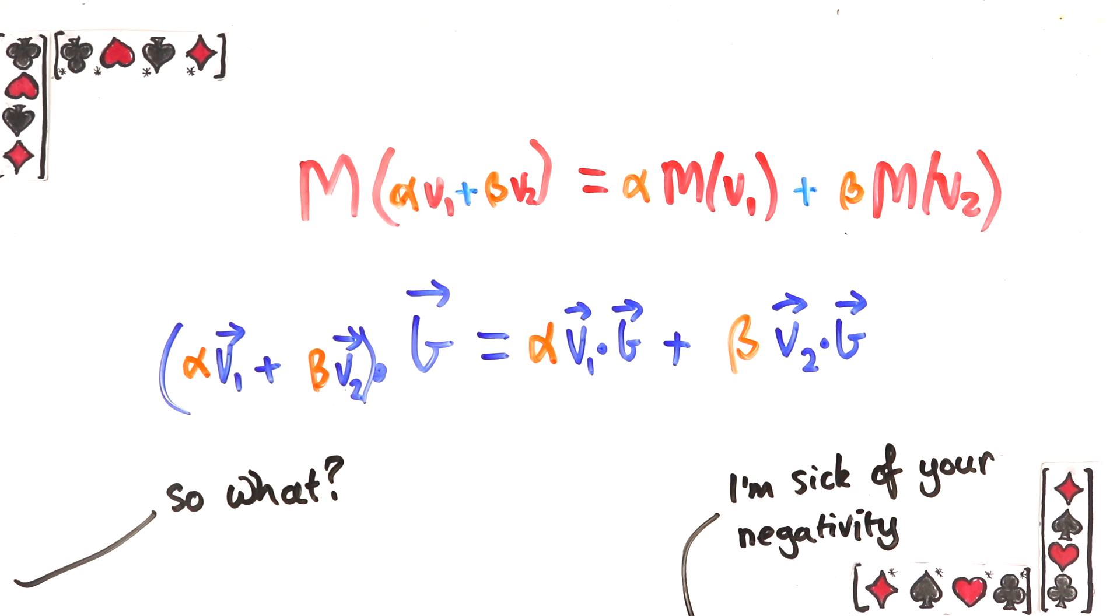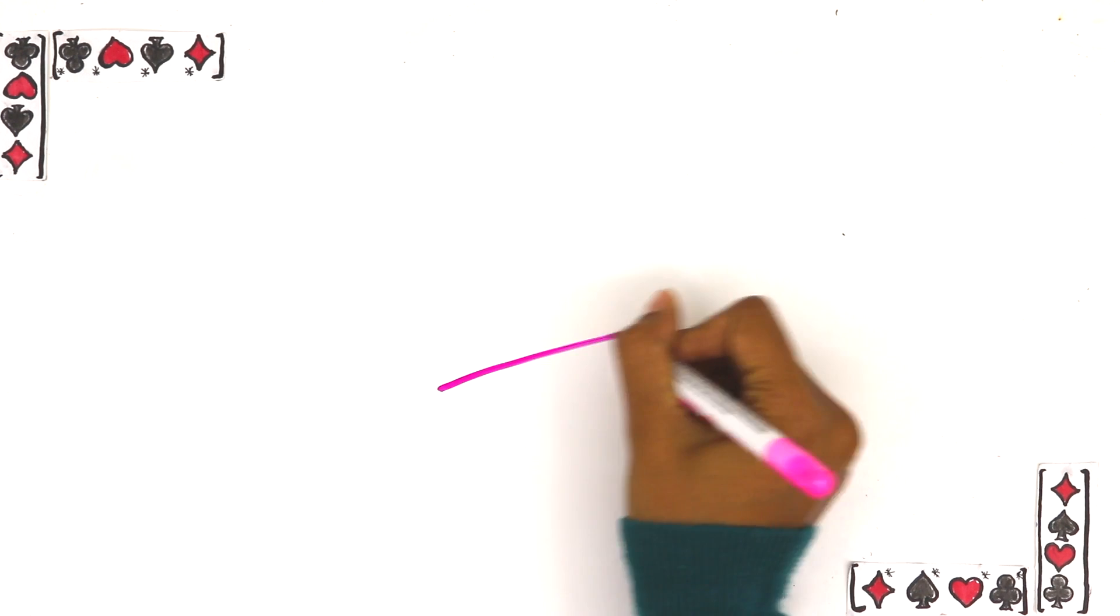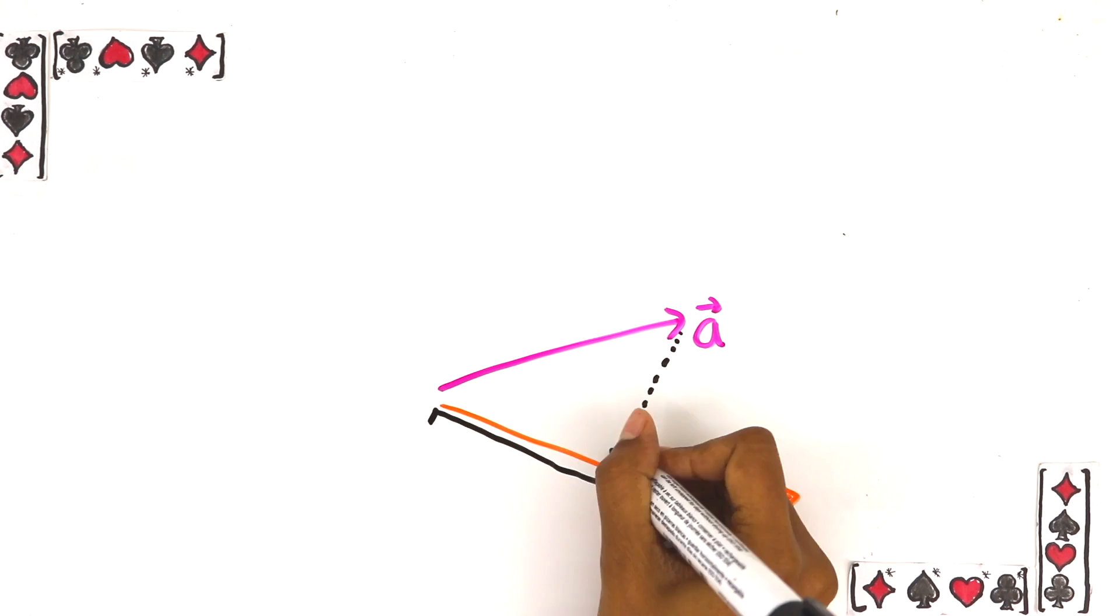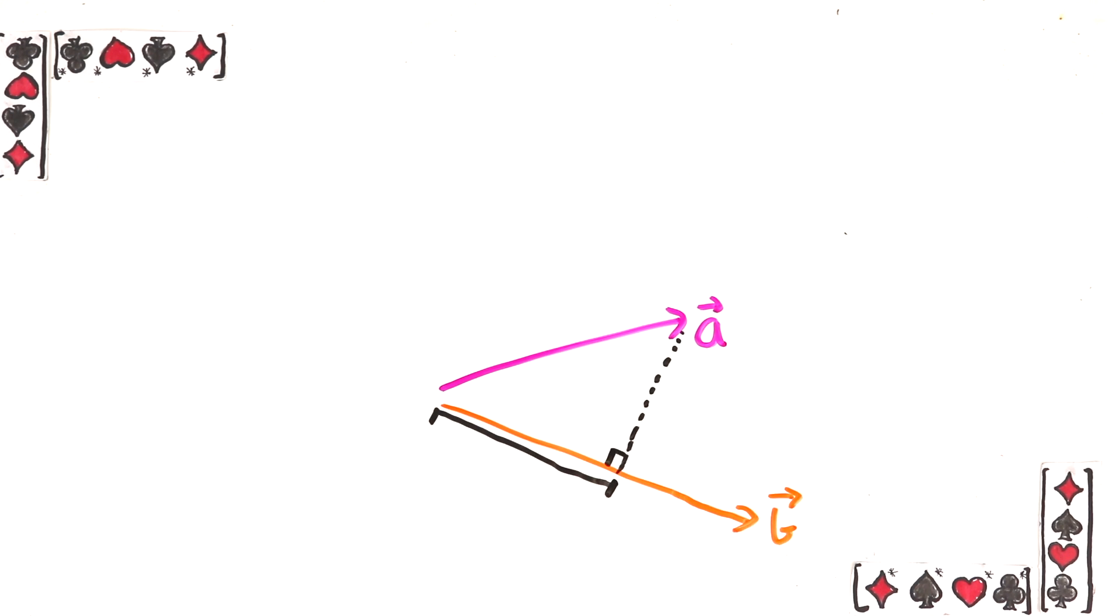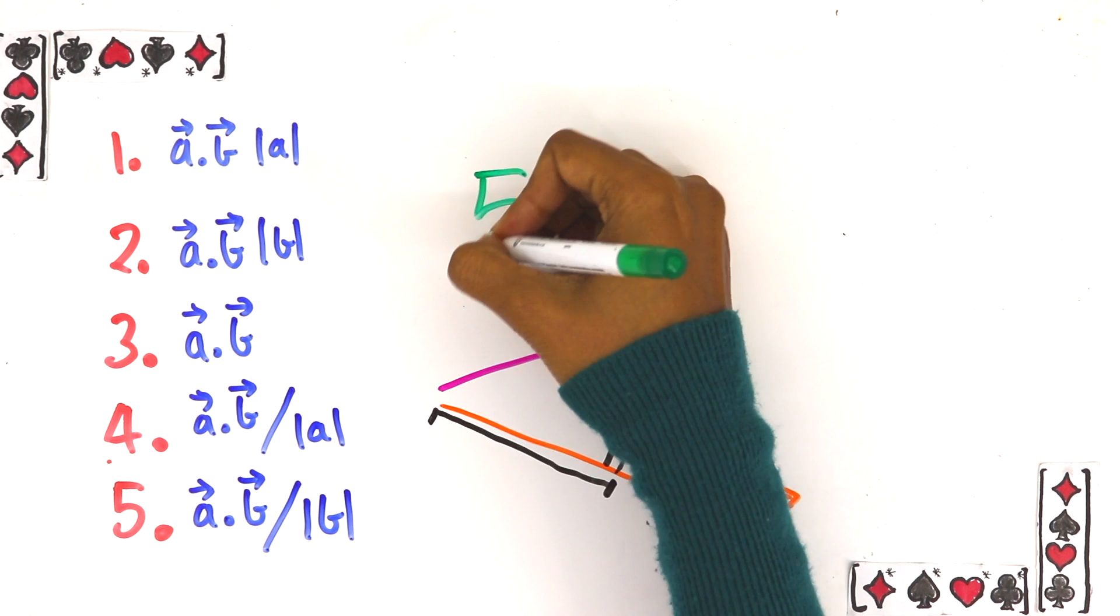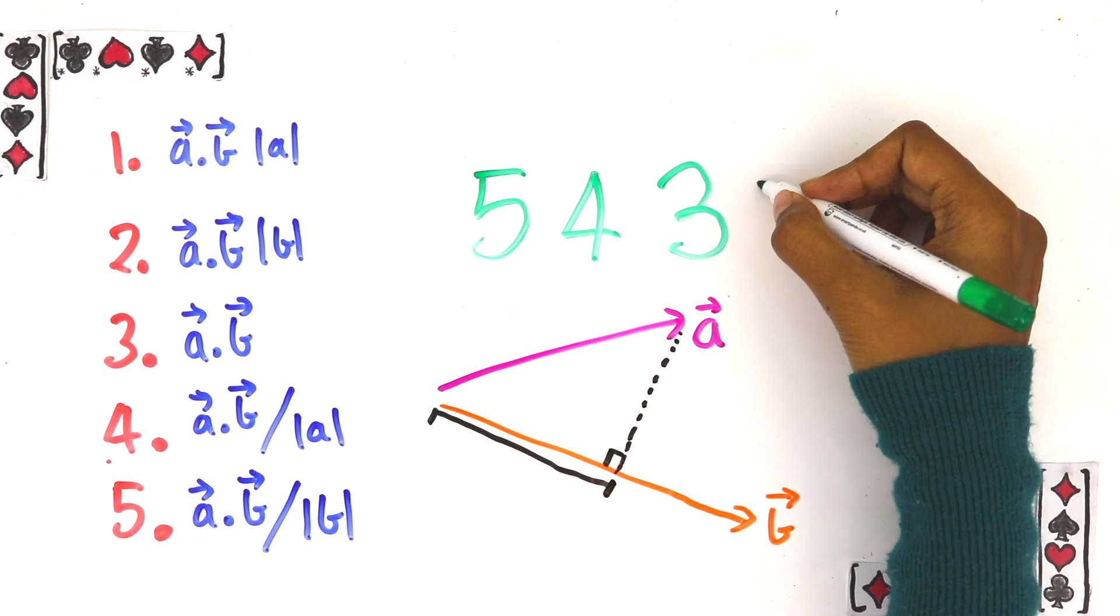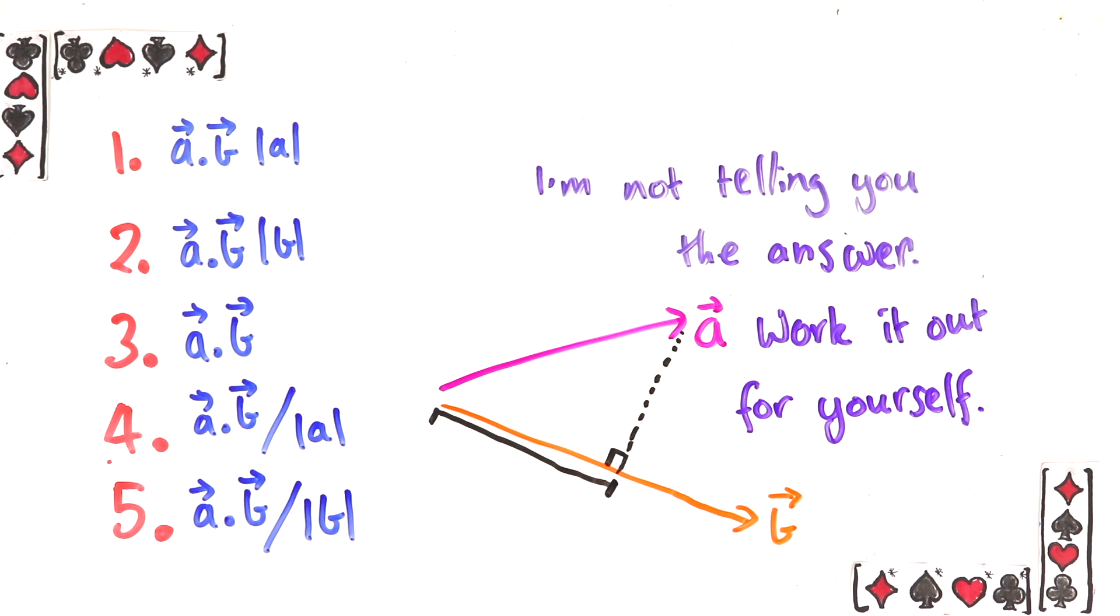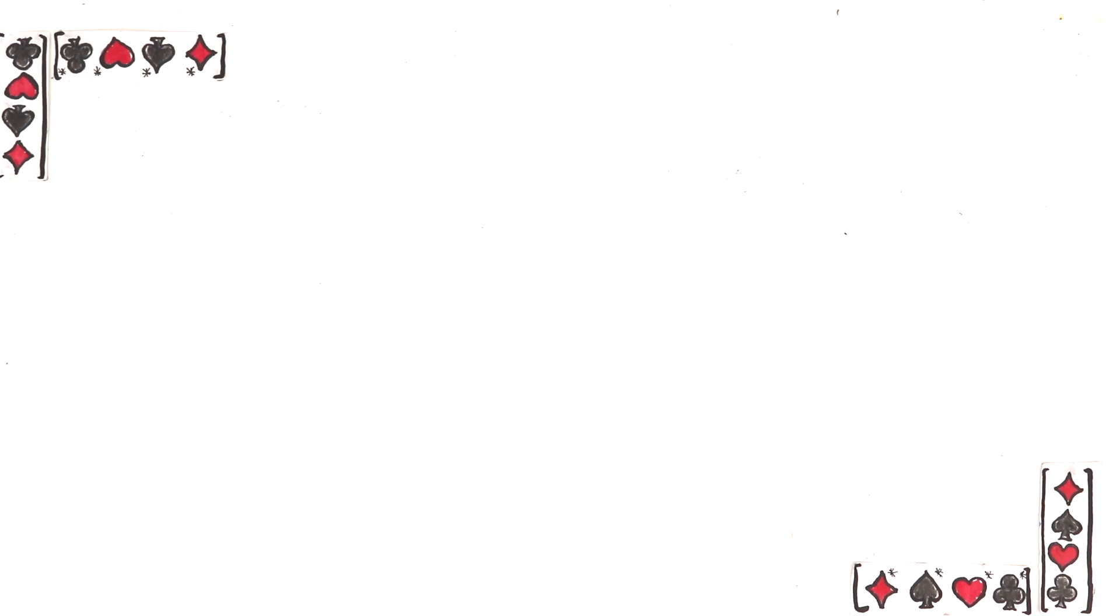But first I want you to figure out the answer to this multiple choice question. Say you have two vectors a and b and you want to know what the length of a projected onto b is. In other words the length of this. What is it in terms of the dot product? Here are your options. Pause now and figure it out. Okay well done. You've just done your first homework.